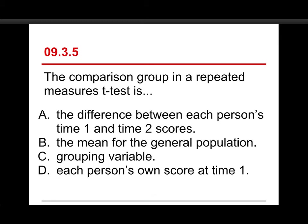Number five, the comparison group in a repeated measures t-test is A, the difference between each person's time 1 and time 2 scores, or B, the mean for the general population, or C, the grouping variable, or D, each person's own score at time 1.